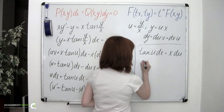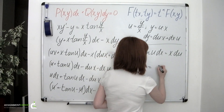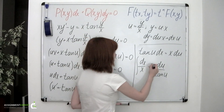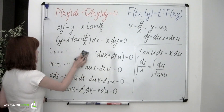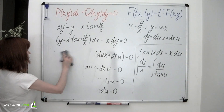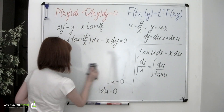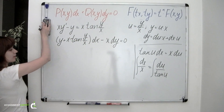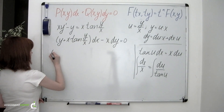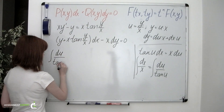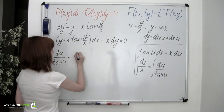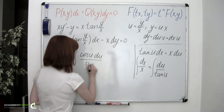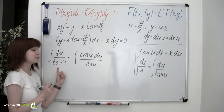This is an equation with separable variables. So we have dx over x equals du over tangent of u. Then we integrate the left side and the right side. Let's consider the integral on the right: the integral of du over tangent of u, which equals the integral of cosine of u times du over sine of u, because tangent equals sine divided by cosine — and since tangent is in the denominator, cosine goes up and sine stays in the denominator.